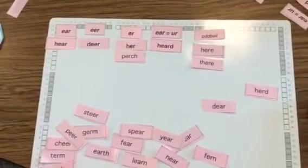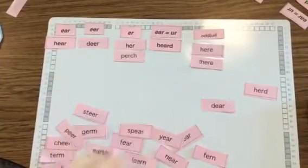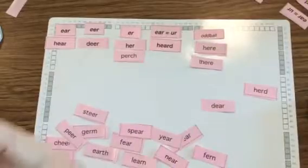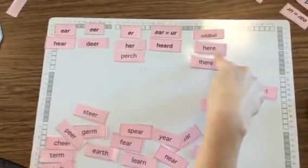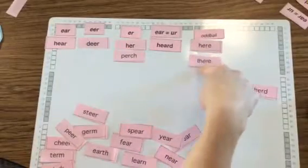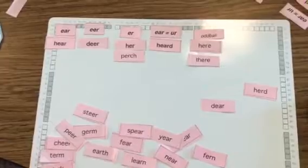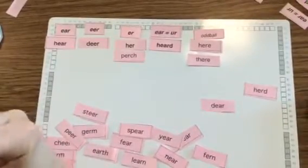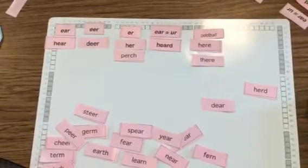We also have some oddballs. The oddballs have the same sounds but they're spelled differently. So we have the word here — it's making the ear sound but the spelling pattern is E-R-E, which doesn't match the other category, so that's going to be our oddball. We also have the word there, and there is making the air sound instead of an ur sound or an ear sound, so that's also going to go into oddball.